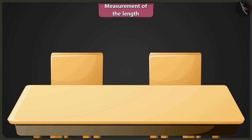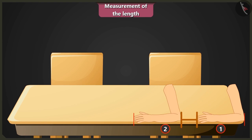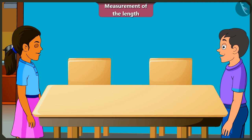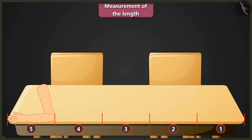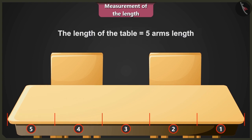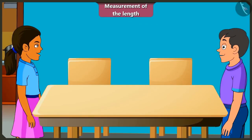No, Gertu, while measuring the length of the table, you have left some space between the two arm lengths. In this way, you can never get the measurement correct. It would be 1, 2, 3, 4 and 5. The length of this table is 5 arm lengths. Yes, now the answer is correct. Thank you, Mintu.